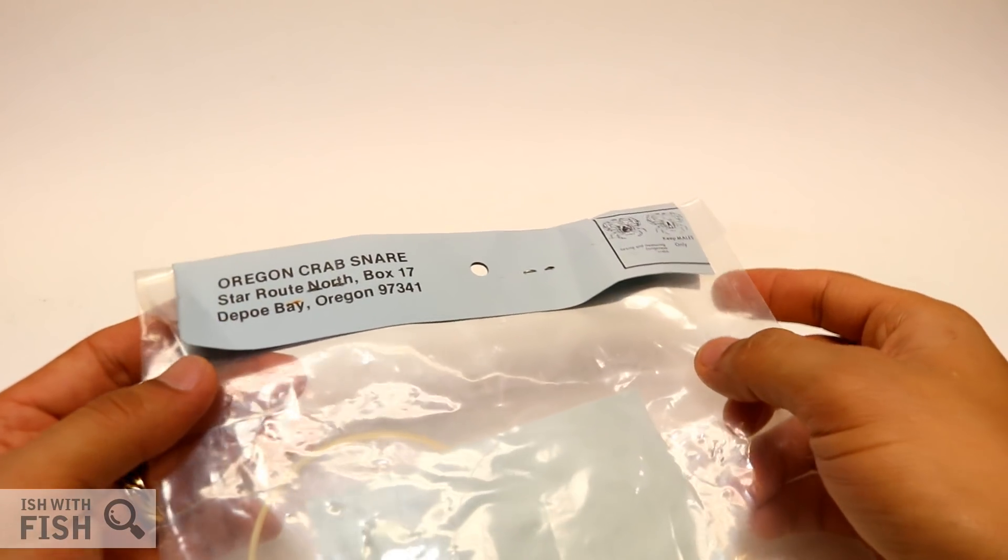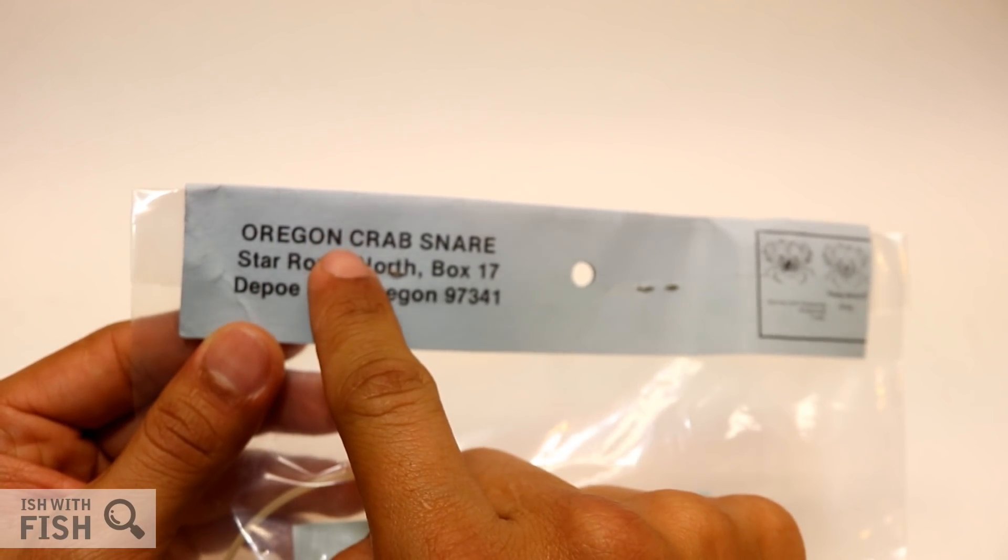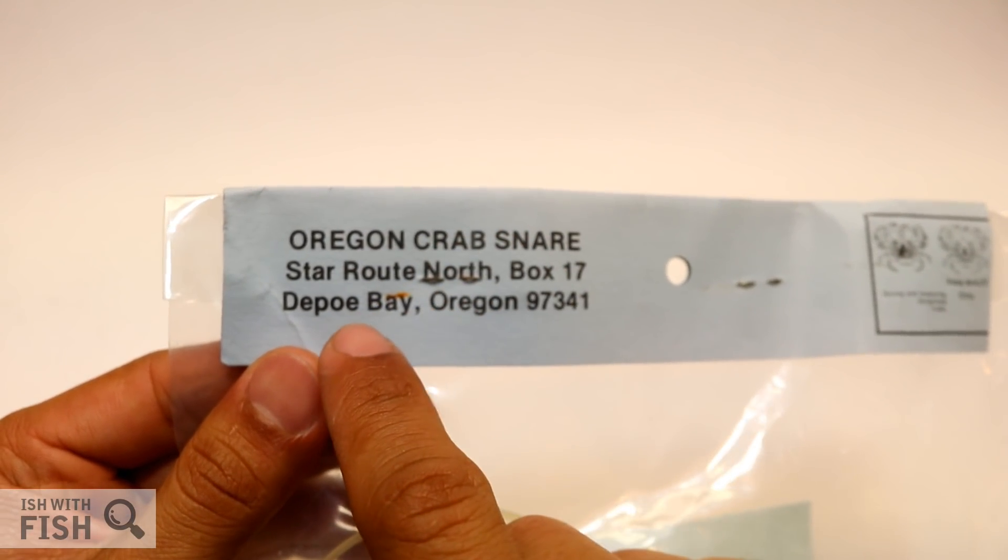I found this crab snare at a pawn shop in Kentucky on eBay of all places, but I know that this product stems from Oregon. One, it says so here - the Oregon Crab Snare comes out of Depoe Bay, Oregon - and two, by this diagram here.